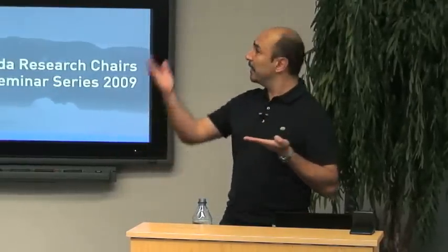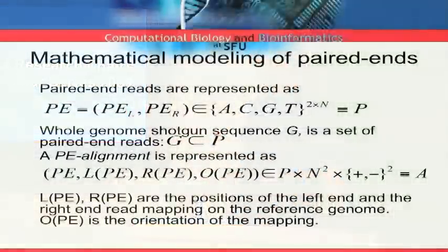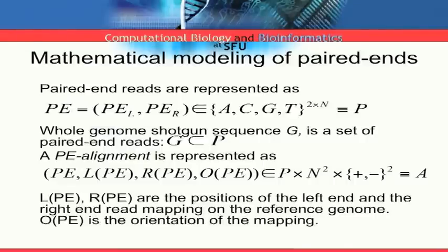So I'll have to say a few things about the mathematical modeling of paired-end reads and their mappings. As we said, the paired-end reads will include the left portion and the right portion. And basically, the whole genome shotgun sequence, G, is a set of paired-end reads. You don't know where they come from. It's just given to you as a pair of sequences. And you have to find an alignment. Basically, take the paired-end reads. Align the left side to somewhere in the reference genome. Align the right side to somewhere in the reference genome. Hope that the distance between them agrees with the distribution that I mentioned.